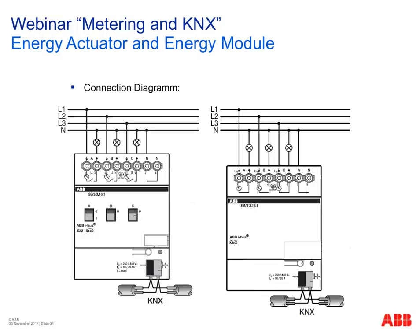Looking at the connection diagram: for the energy actuator, each phase enters the device through the relay and back to the load — three times. Importantly, unlike a normal switch actuator, the neutral wire must also be connected here; without it, voltage cannot be measured. The device measures voltage and current very precisely and frequently — every 20 milliseconds at 50 Hz — and calculates all other values from those. The energy module is connected the same way.